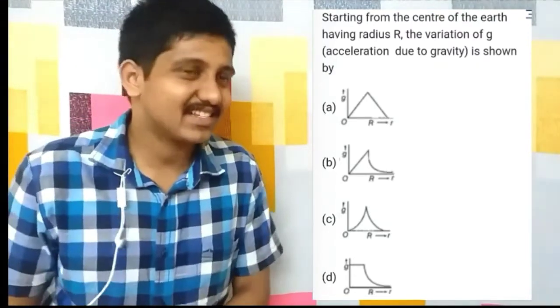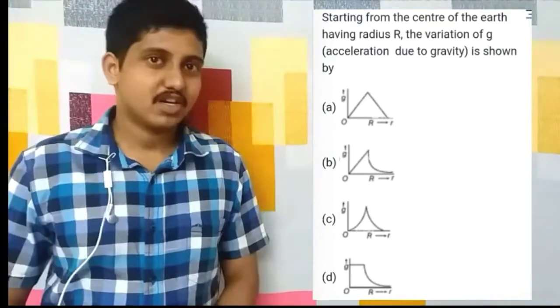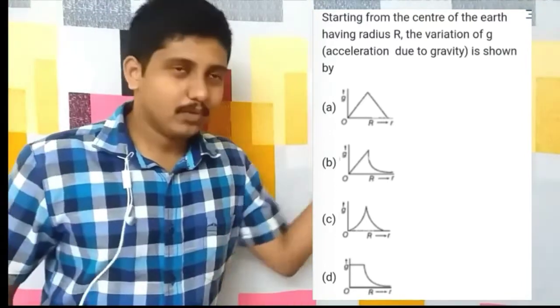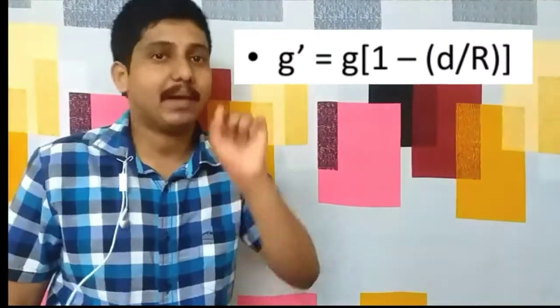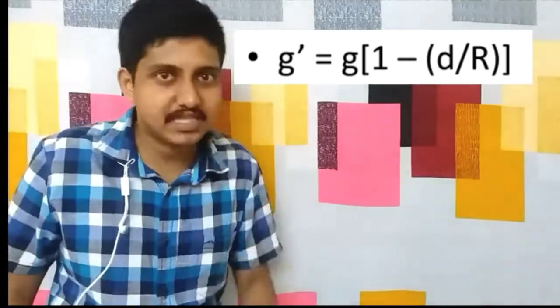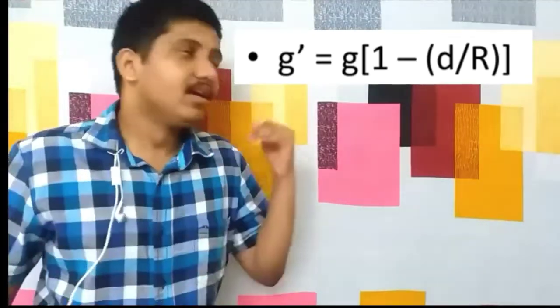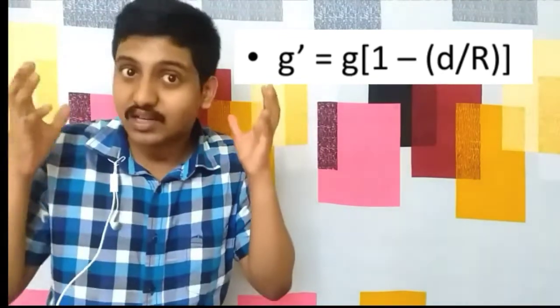Let's discuss the answer. There is a variation of g from the center of the earth. Here, g' is the actual acceleration due to gravity. If it is at a particular depth, we know the formula: g' = g × (1 − D/R), where D is the depth from the surface of the earth. We assume that the earth is a solid sphere.